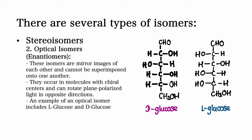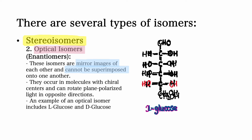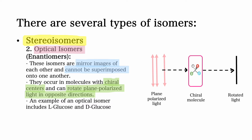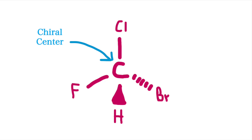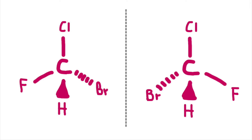The second type of stereoisomer is an optical isomer, also called enantiomers. These isomers are mirror images of each other and cannot be superimposed onto each other. They occur in molecules with chiral centers and can rotate plane-polarized light in opposite directions — one enantiomer rotates it clockwise, whereas the other rotates it anti-clockwise. A chiral center refers to an asymmetric carbon atom bonded to four distinct substituents, resulting in non-superimposable mirror images.